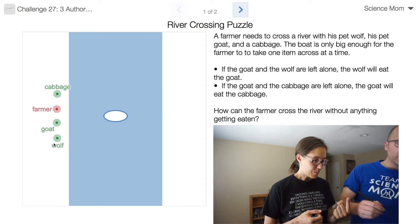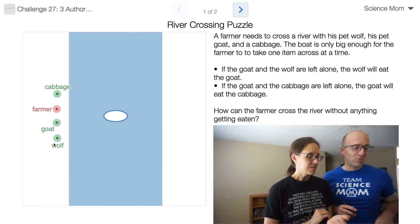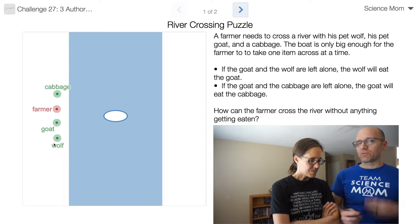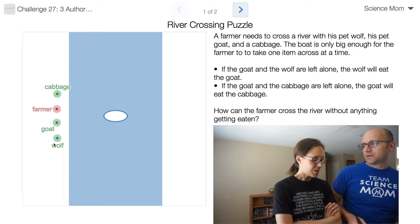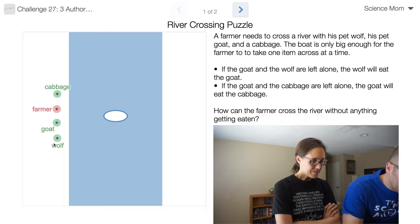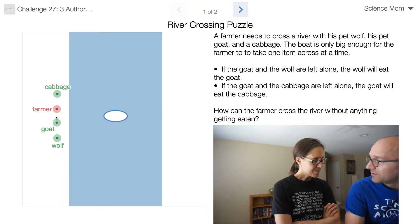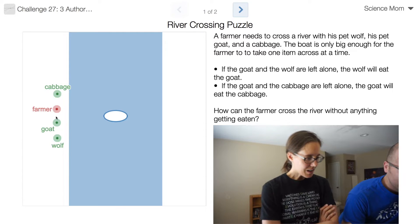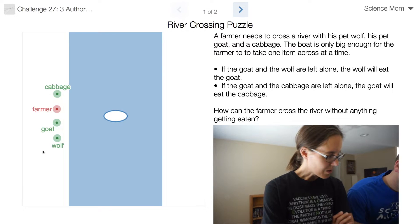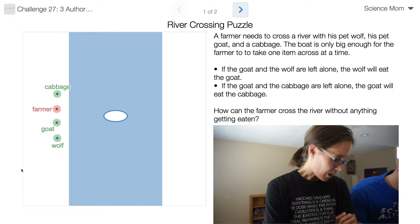And you can only have one thing in the boat at a time? That's correct. The farmer can only get one thing in the boat at a time, and of course the farmer has to row the boat. Okay, so talk me through it. Do you remember? I think that he needs to take the, well he has to take either the goat or the cabbage across first.